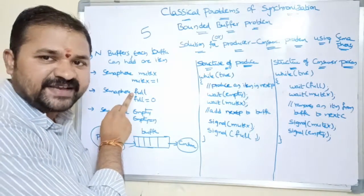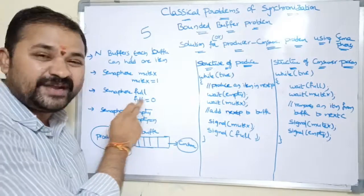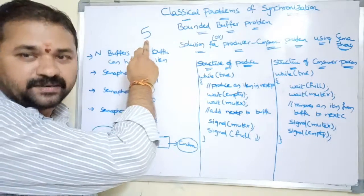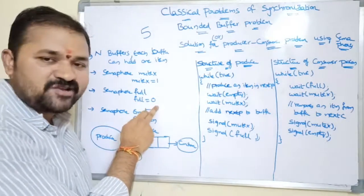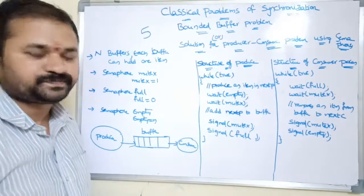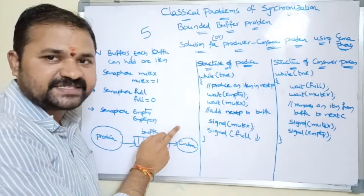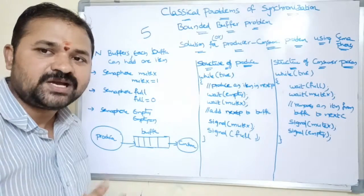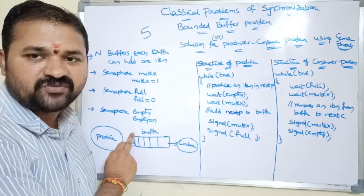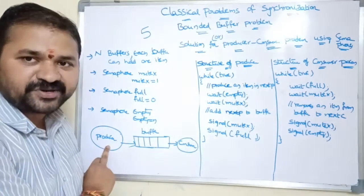The semaphore 'full' specifies how many buffers are full. Its initial value is 0 because initially all buffers are empty, meaning no buffers are full. The semaphore 'empty' specifies how many buffers are empty. Initially all buffers are empty, so the initial value of empty is N.